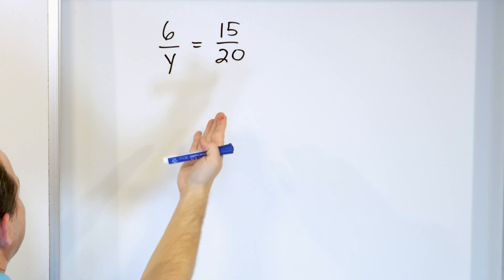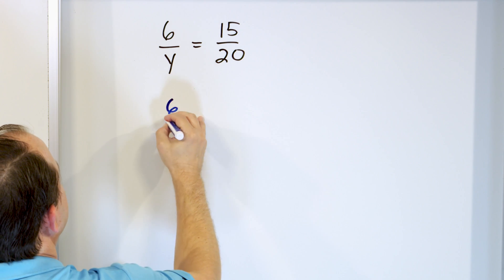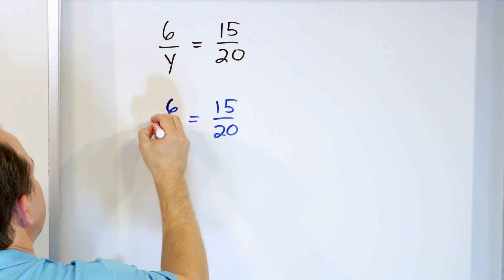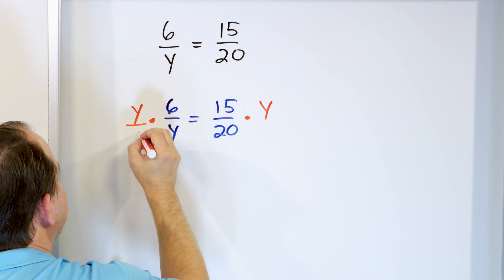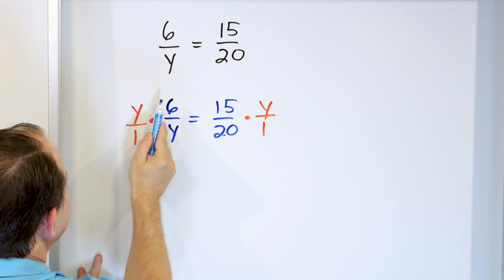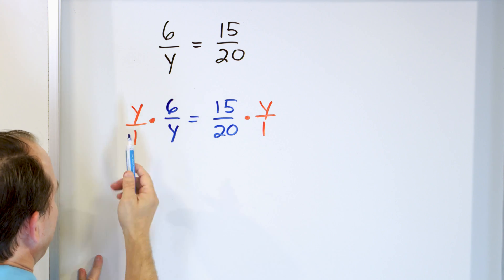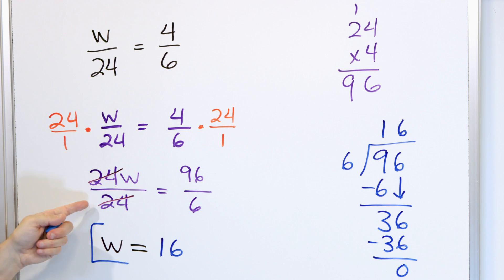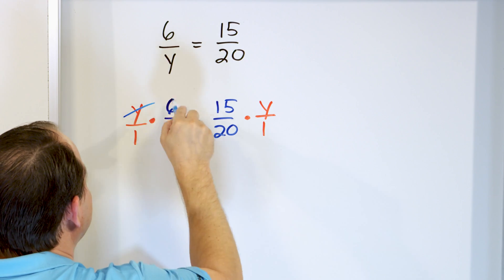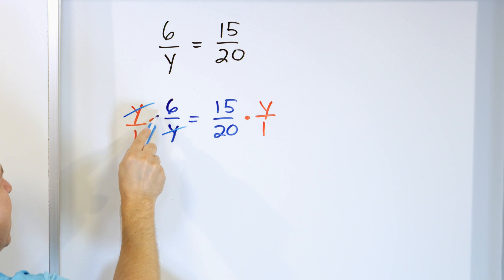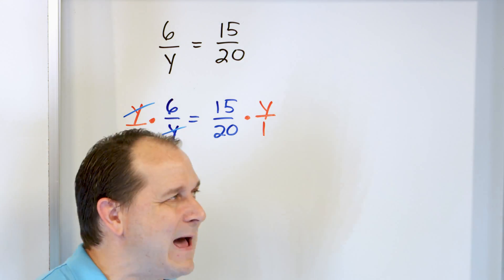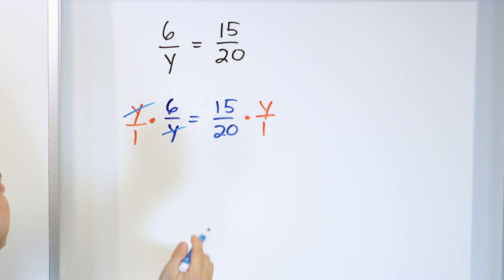So y is on the bottom. We cannot isolate it on the bottom, so we have to move it to the top first. We have 6 over y equal to 15 over 20. Multiply both sides by y — we can write it as y over one. On the left, you'll get y times 6 or 6y on top and y times one or y on the bottom. The y's are going to cancel either way, so we'll just cancel ahead of time. On the left, we have 6 divided by 1, which is just 6.